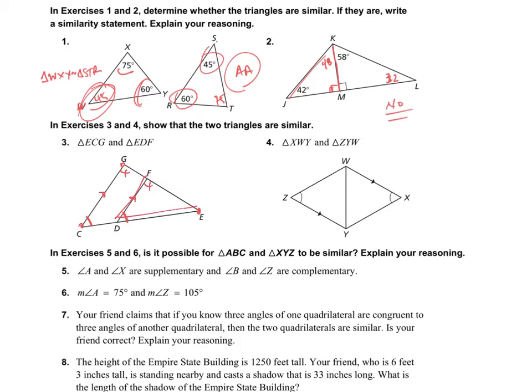For this one, look, these are parallel right here. Here's the transversal, so this angle is congruent to that one. And they already told me the other ones. So these two are by angle, angle, right? Just like here, angle, angle. And we've proved that those are similar.